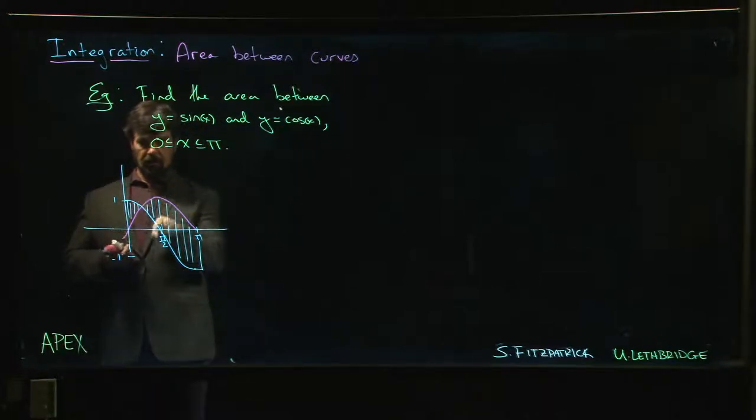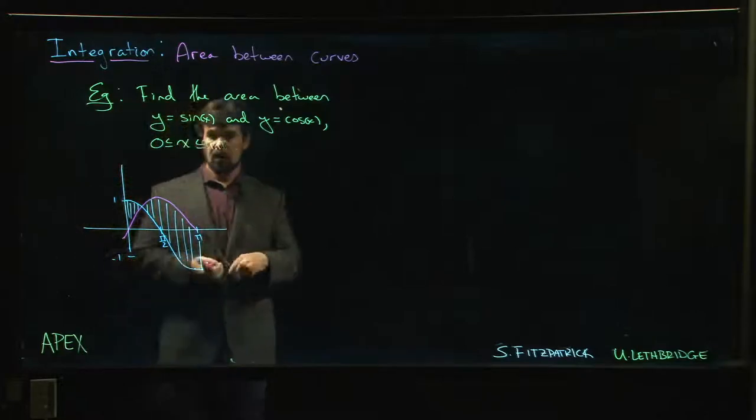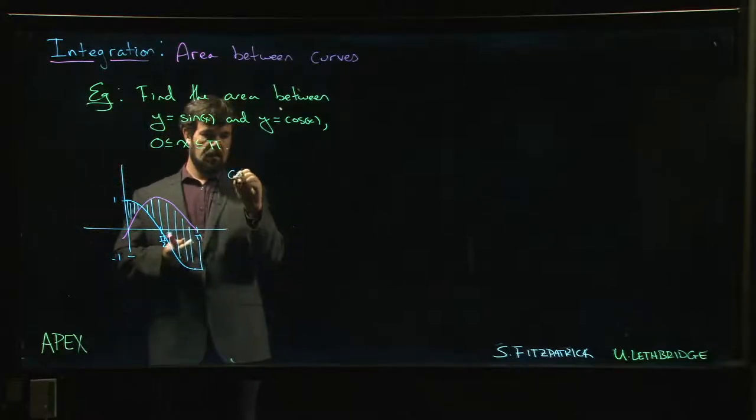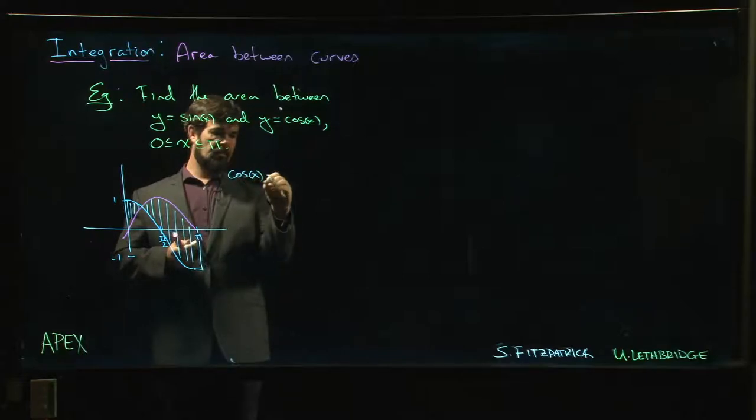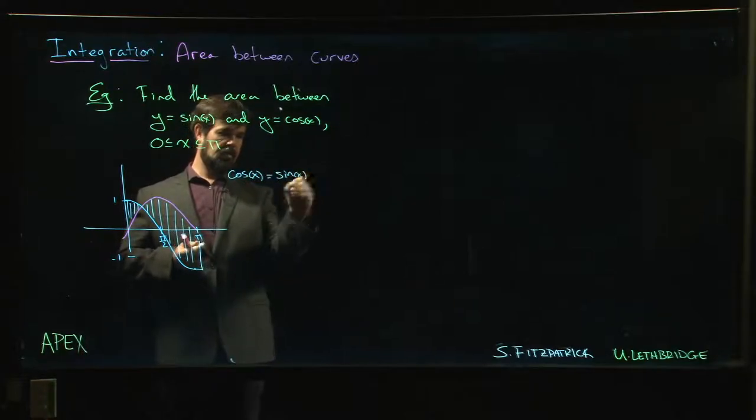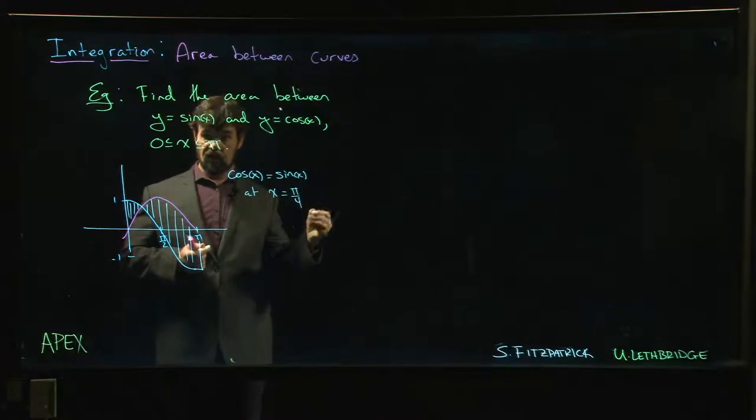And now we see the problem. This question of which curve is the upper curve, which curve is the lower curve—the answer changes partway along the interval. Where does that answer change? The answer changes where those two intersect, and we know where that happens: cos x equals sin x. That happens at π over 4, right? They're both equal to 1 over √2.